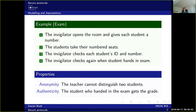We have two properties we want to achieve with this protocol. The first is anonymity, which means the teacher cannot distinguish between two students — that's why students are given numbers and write the numbers on the exam rather than their name or identification number. The second is authenticity, probably the most crucial, because we want to make sure the student who handed in the exam gets the grade.